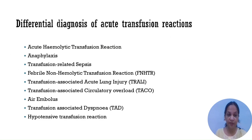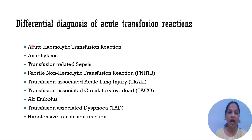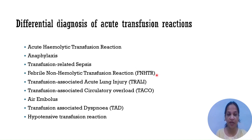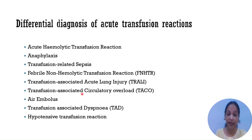There are nine important differential diagnoses of acute transfusion reactions: acute hemolytic transfusion reaction, anaphylaxis, transfusion-related sepsis, febrile non-hemolytic transfusion reaction, transfusion-associated acute lung injury (TRALI), transfusion-associated circulatory overload (TACO), air embolus, transfusion-associated dyspnea, and hypotensive transfusion reaction.